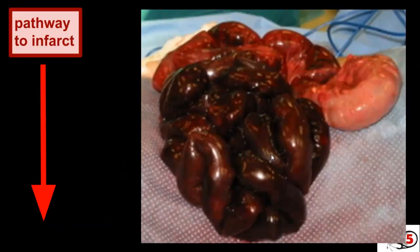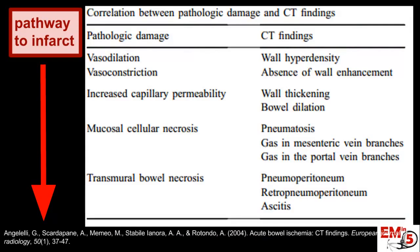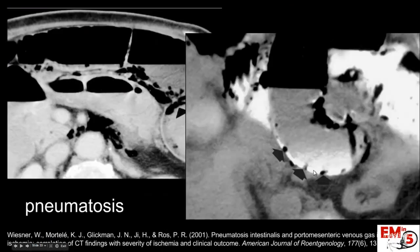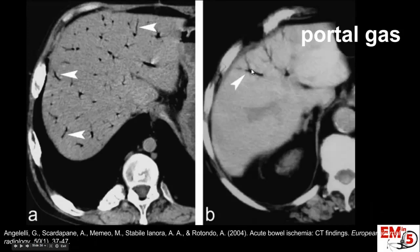On this pathway to infarct, as the bowel becomes more and more ischemic, you'll see different things. You can see vasodilation or constriction, and bowel wall thickening as the capillaries start getting more permeable. Eventually we'll see cell breakdown, which results in pneumatosis, and then gas goes into the mesenteric veins and portal veins — very concerning signs. And once it perforates, you're going to see free air or pneumoperitoneum. Here are examples of pneumatosis — air bubbles in the bowel wall — and examples of portal gas, again a very concerning finding.